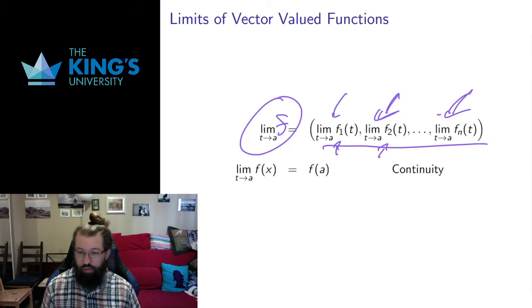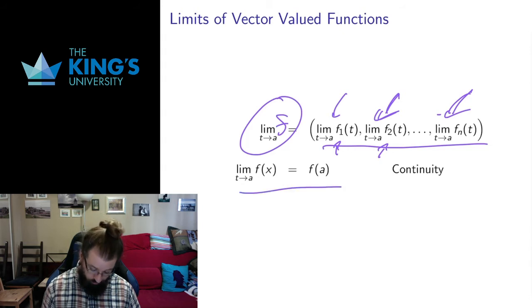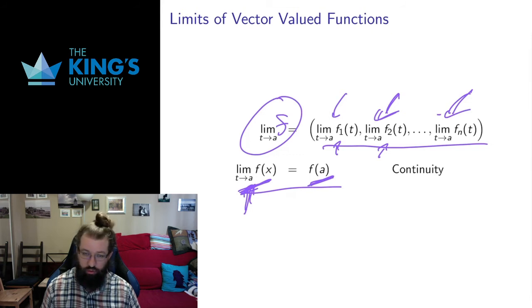We can also talk about continuity, and the definition of continuity is exactly the same as before. A function is continuous if its limit is the same as its value. So this is what happens as t approaches a. t approaching a still happens in the real numbers. The input to all of these functions is still in the real numbers. So this is going to be approaching, it approaches some vector, and if it approaches the same as the value of that function, then we call the function continuous. This is harder to see and harder to draw, because we don't necessarily have nice graphs of these things, because they have too many variables. But the algebraic formal definition still makes sense. Function is continuous if its limit and its value are the same.